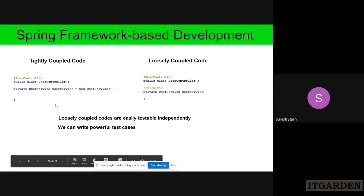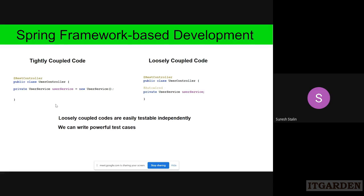In loosely coupled code, instead of using the new operator, you use the @Autowired annotation. When you say @Autowired, Spring takes the UserService object from the IOC container and injects it. On the tightly coupled side, you write UserService = new UserService(). On the loosely coupled side, you write @Autowired and then UserService — that's it. The Spring IOC container manages and provides the object.